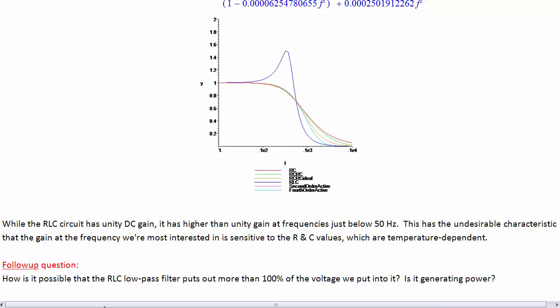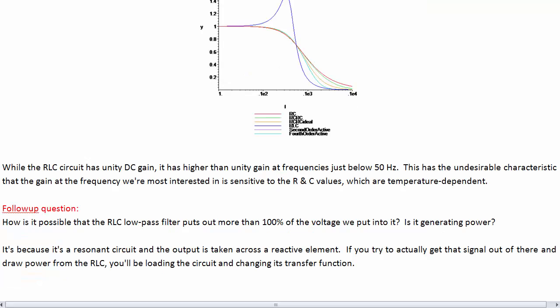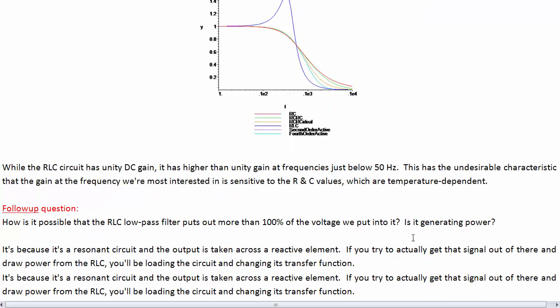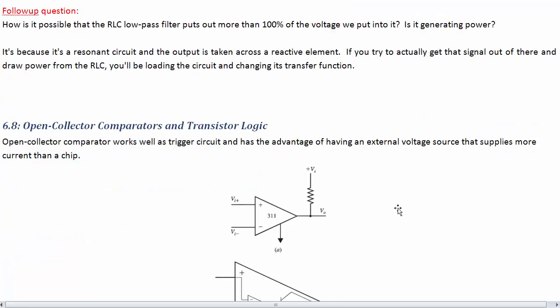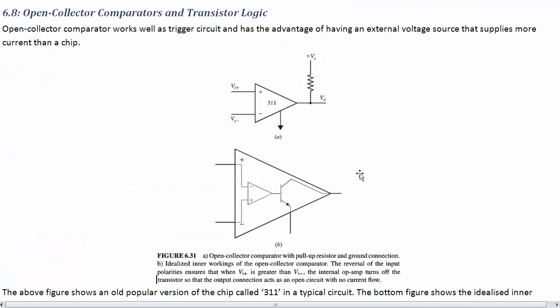Follow-up question. How's it possible that the RLC low-pass puts out more than 100% of the voltage that we put into it? Is it generating power? No, it's because we're taking the output across a reactive element and it's a resonant circuit. So, if you actually try to get signal out of there, then you'll be loading that element and the transfer function is going to change a fair bit.